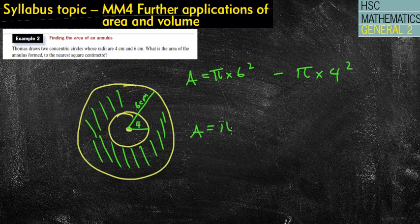If you use the formula, you might do π brackets 6² take away 4². That's using the annulus formula. It doesn't actually matter which way you do it, because it's going to generate the exact same answer anyway.